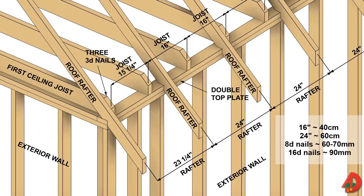A roof must withstand a great deal of weight and stress. To guarantee structural strength, the dead and live load that a roof will bear must be considered in roof design and construction. Dead load is the weight of the materials used to construct a roof. Roof rafters, sheathing, insulation, and finish covering such as shingles or built-up roofing are included in the dead load.